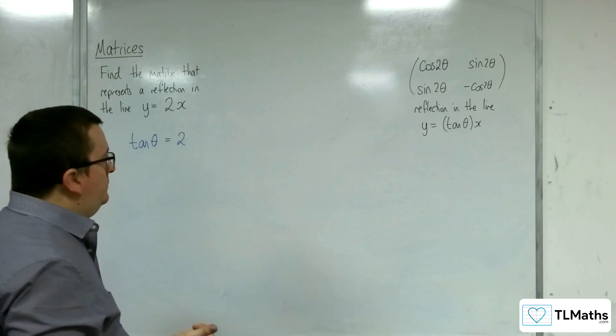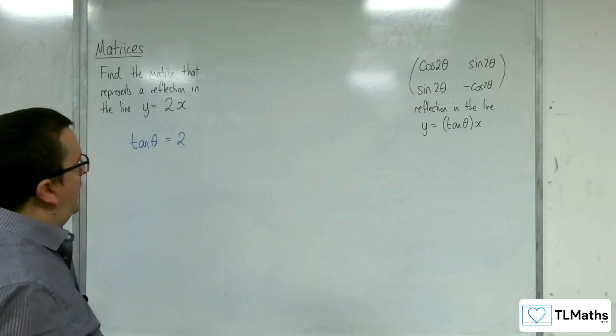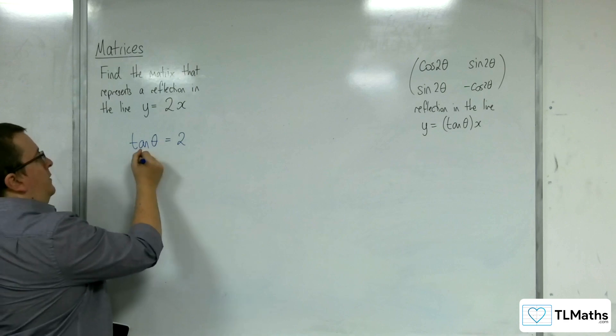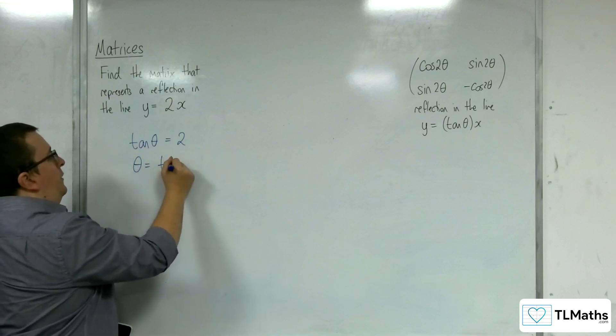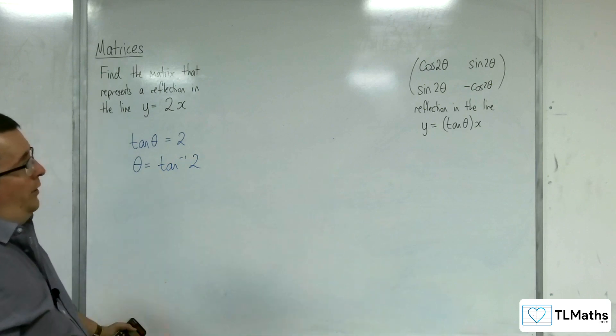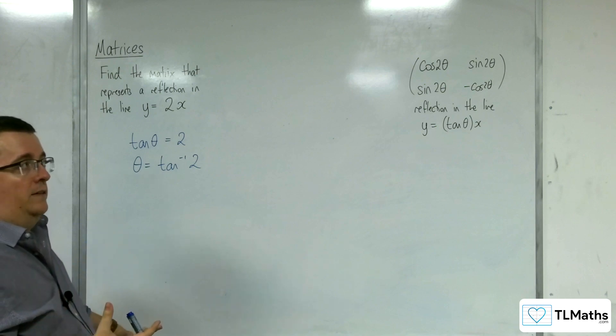So in doing that, I could work out the angle theta by using the inverse tan of 2. And then I can substitute it into cosine 2 theta and sine 2 theta and then just fill in my matrix.